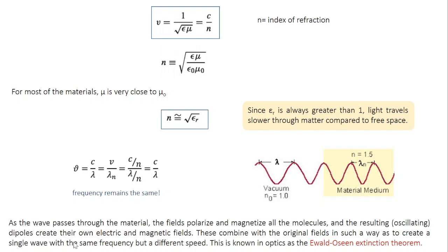As you know, an oscillating dipole creates its own electric and magnetic field. So now you have two types of field. One is the incident field and one is the induced field. What happened? The induced fields combine with the original fields in such a way as to create a single wave with same frequency but different speed. This is also known as evolved-ocene extension theorem in optics. So whatever changes we see in velocity or wavelength, this is an outcome of intermixing of different fields, the incident field as well as the induced field.